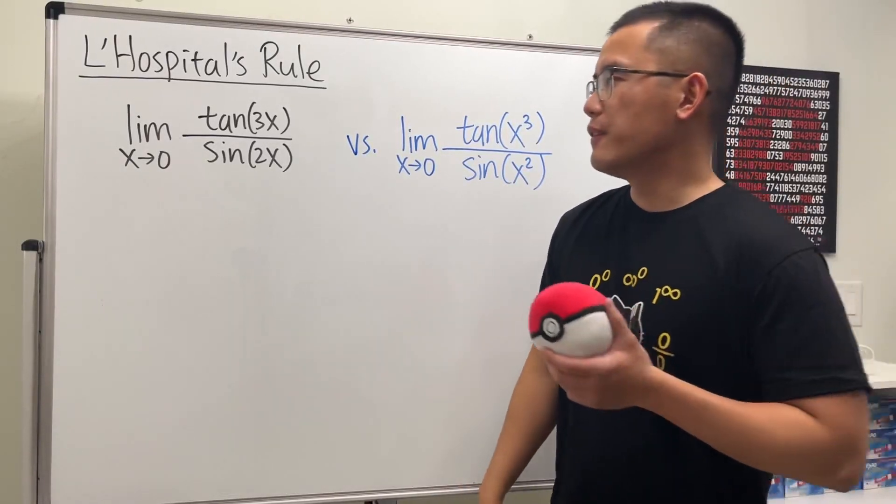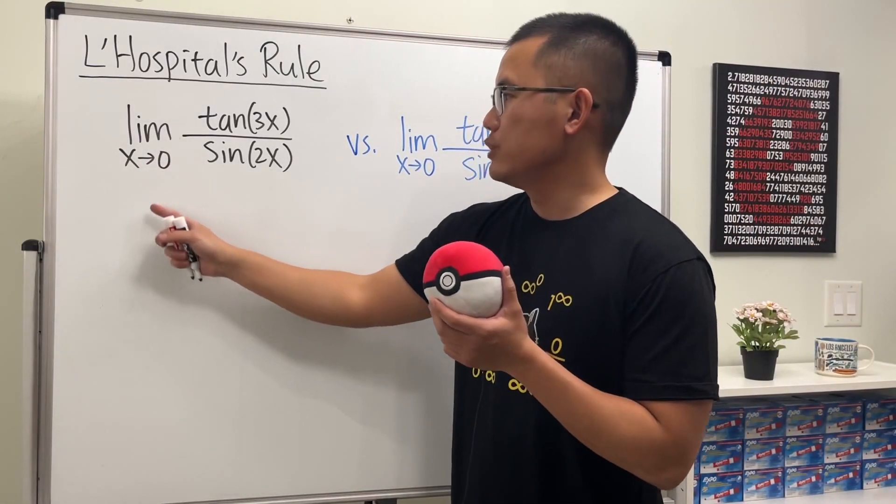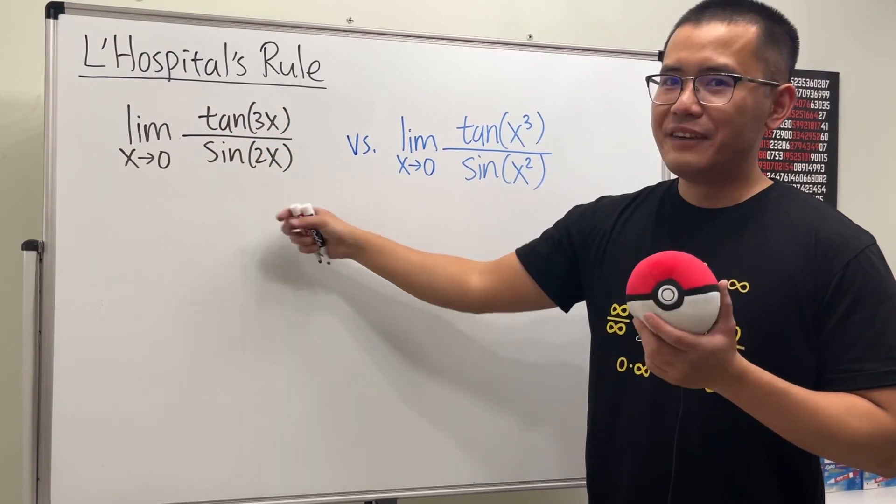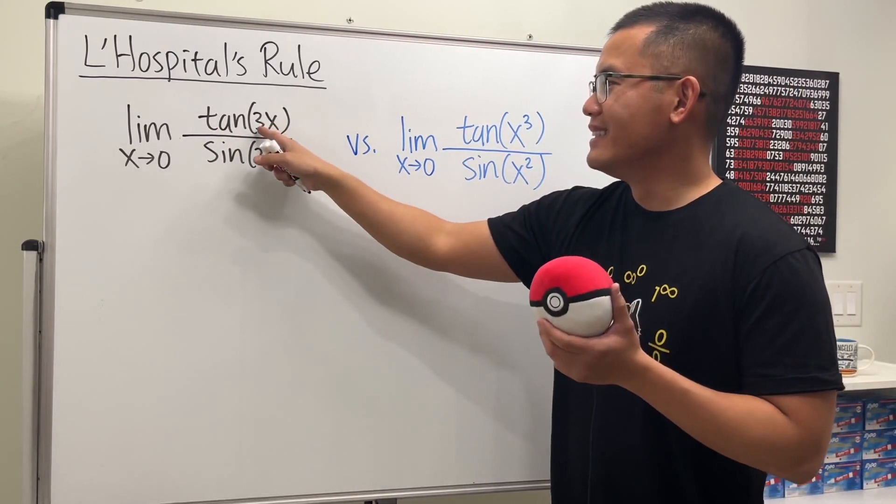Alright, here I have these two limits for you guys. The first one is the limit as x approaching zero, and we have tangent of 3x over sine of 2x. And for the second one, I put the numbers and make them become powers.